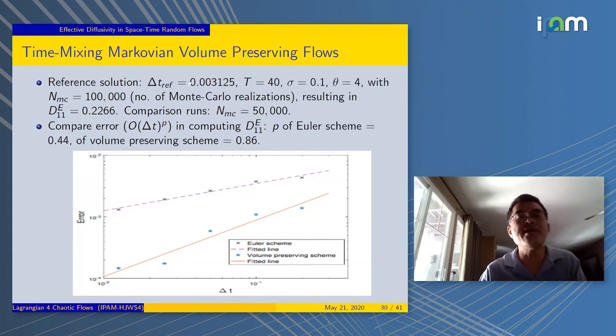Now let's go to the simulation. We created the reference solution with 100k Monte Carlo realizations, capital T equals 40, σ equals 0.1, and here's 0.03. That's the reference time step. Then we look at the other time step and see how the methods converge. Below is we're plotting the error versus time step. As the time step is small, the volume-preserving scheme follows the red line with exponent 0.86.